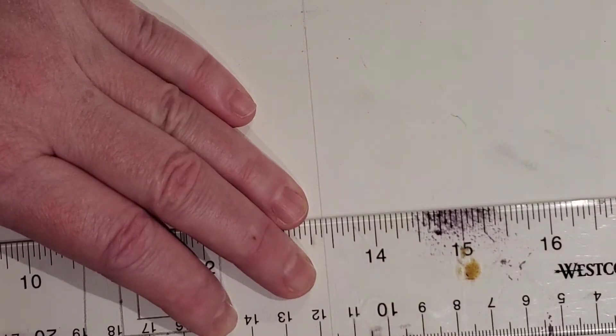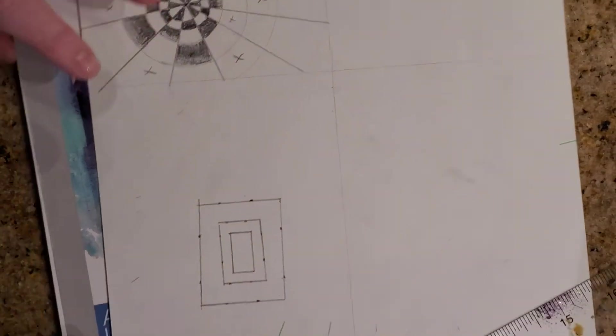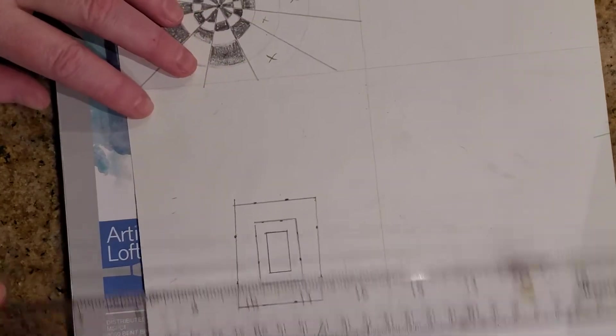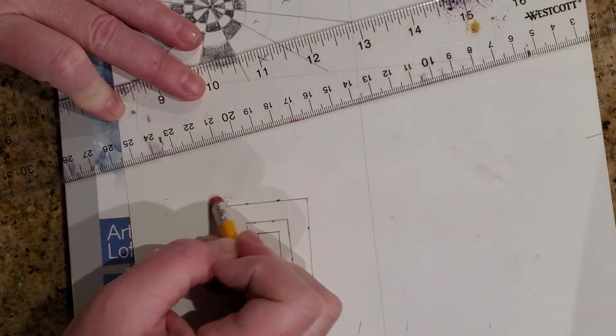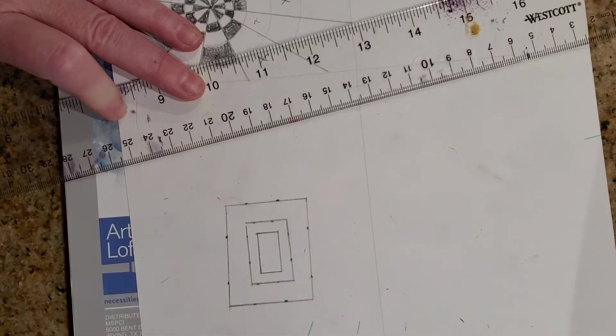When you're drawing this design, I would say use a 2H or an HB, which is just like a regular number two, and draw lightly so that if you do need to erase, you can and it doesn't damage the paper.